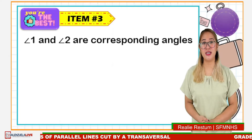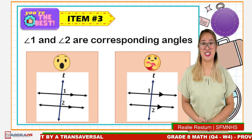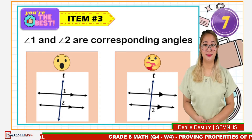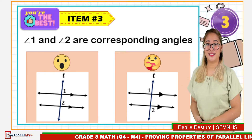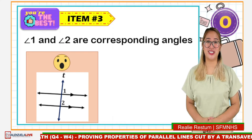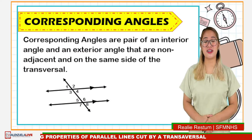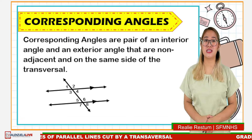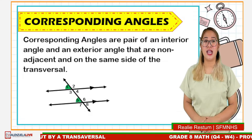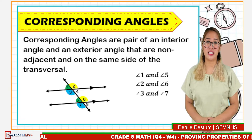Item number 3: Angle 1 and angle 2 are corresponding angles. Is it the wow or care reaction? Time is up! The correct answer is the wow reaction. Excellent! Corresponding angles are a pair of an interior angle and an exterior angle that are non-adjacent and on the same side of the transversal. In the given figure, the pairs of corresponding angles are angle 1 and angle 5, angle 2 and angle 6, angle 3 and angle 7, and angle 4 and angle 8.